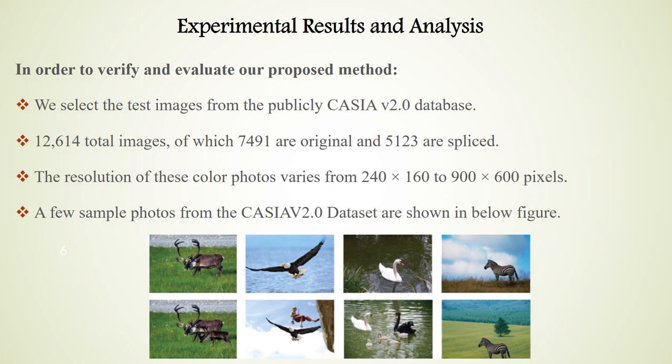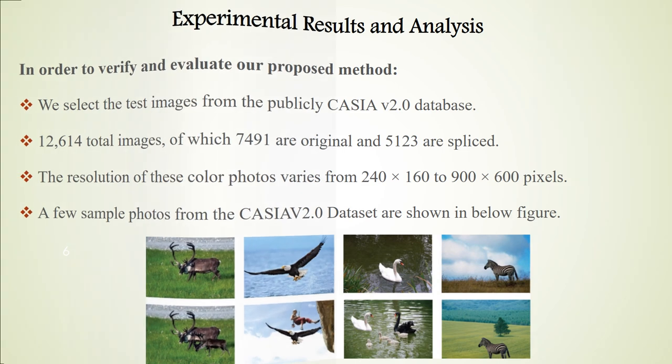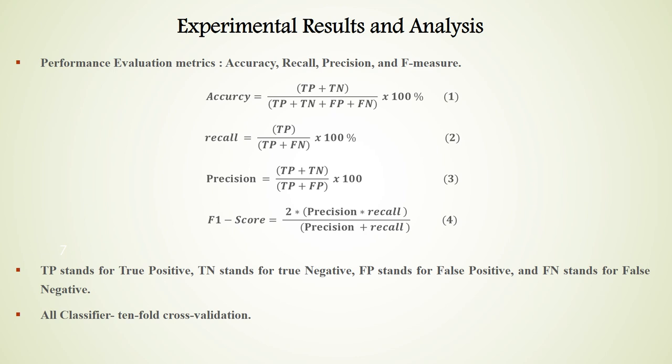For experimental results and analysis, in order to verify and evaluate our proposed method, we selected test images from the public dataset CASIA 2 database, which contains above 12,000 images with a resolution of 240 by 160 pixels. You can see sample images from this database in the figure below. For performance evaluation, we use four measures: recall, accuracy, precision, and F1 score.